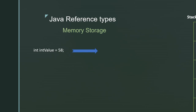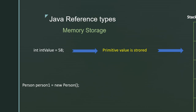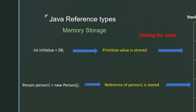In memory storage in Java, for example, we have an int variable which holds the value 58. In Java memory we store the value of this primitive — we store 58. In the case of reference type, for example an instance of the class Person, we only store the reference of person1, not the value. So in Java stack memory we hold the value of primitive types but only the reference of the real object for reference types.